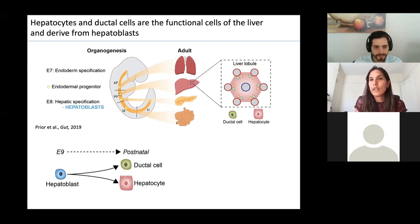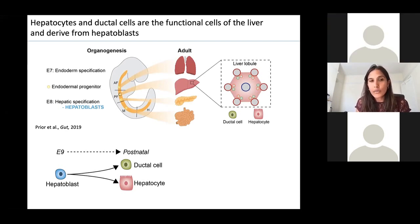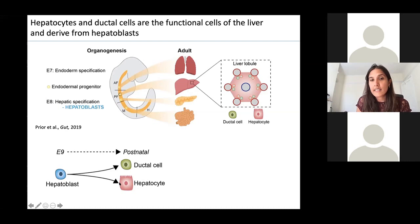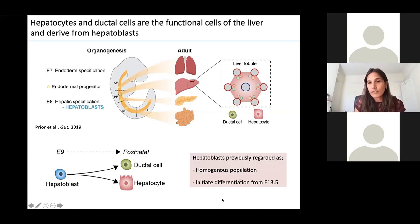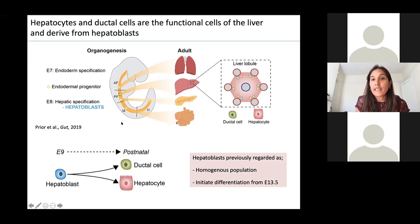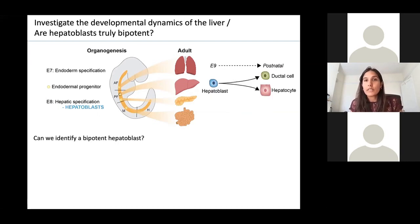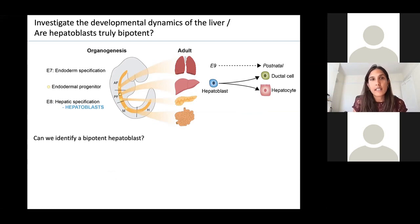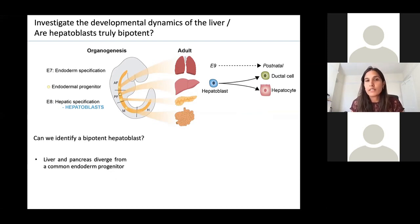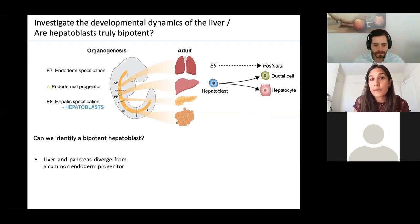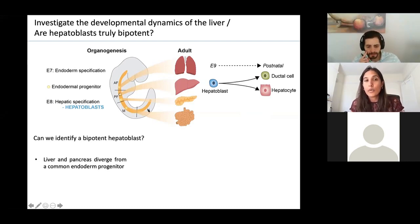That has been shown at the population level, but it was not known whether, like what we see in vitro, a single cell can give rise to both ductal cells and hepatocytes in vivo. Previously, hepatoblasts were regarded as a homogenous population with the same potential, initiating differentiation later at E13.5. My question was: can we identify a truly bi-potent hepatoblast — a single cell giving rise to both ductal cells and hepatocytes — and can we get more information about the dynamics of liver differentiation? To do that, we needed markers specific to liver hepatoblasts and not other endodermal organs, especially given the pancreas and liver derive from a common progenitor.